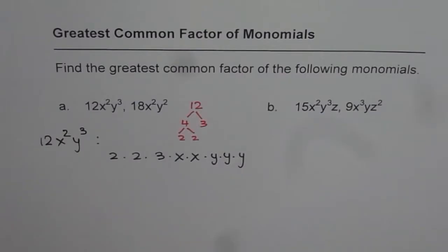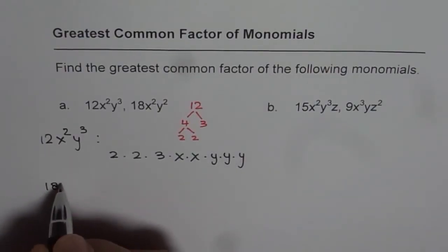So that is how we can get all the basic factors of the given monomial. Let's perform the similar operation on the second monomial, which is 18x²y².